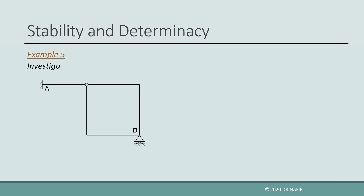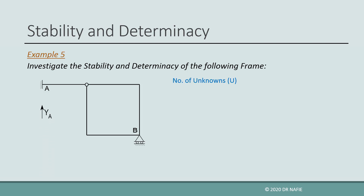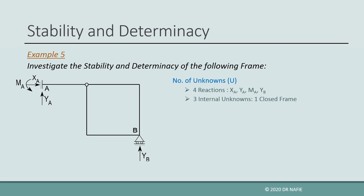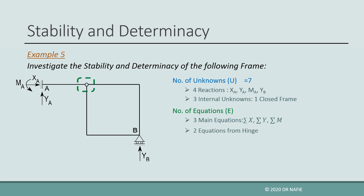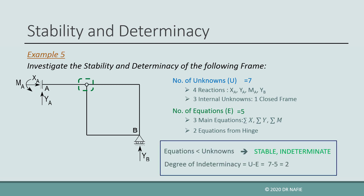Let us look at the last example. The frame shown has two supports: a fixed support with three reactions and a roller support with one reaction, making the total reactions 4. The frame also has one closed loop, so the number of internal unknowns is 3. Therefore, the total number of unknowns is 7. The total number of equilibrium equations is 5, consisting of the three main equations plus two equations from the intermediate hinge, because the hinge provides two independent rotations. Therefore, the frame is stable and two times indeterminate.